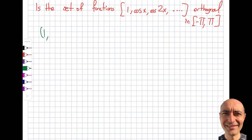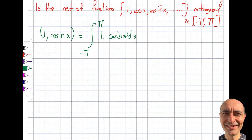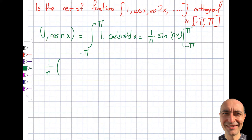For case one, I need cosine of nx where n goes from 1 to infinity. Writing the definition, I integrate from minus pi to pi: 1 times cosine of nx dx. This is fairly easy integration. The result is 1 over n times sine of nx, evaluated from minus pi to pi. That gives 1 over n times the quantity sine of n·pi minus sine of minus n·pi.